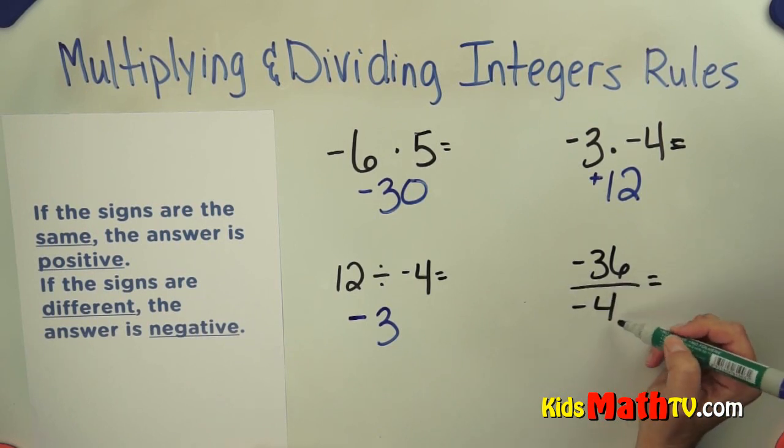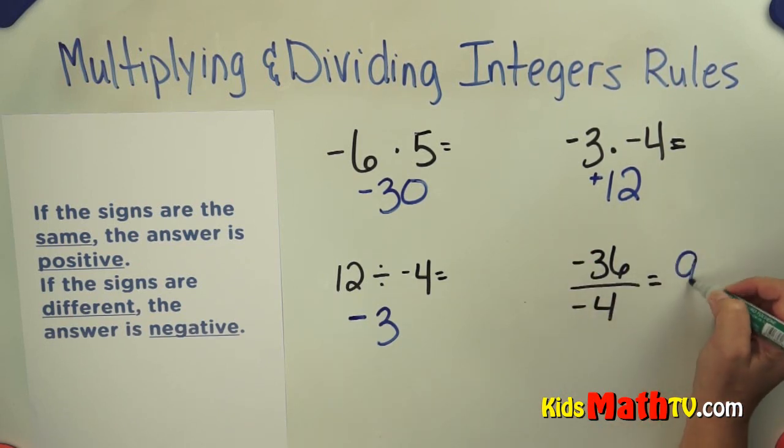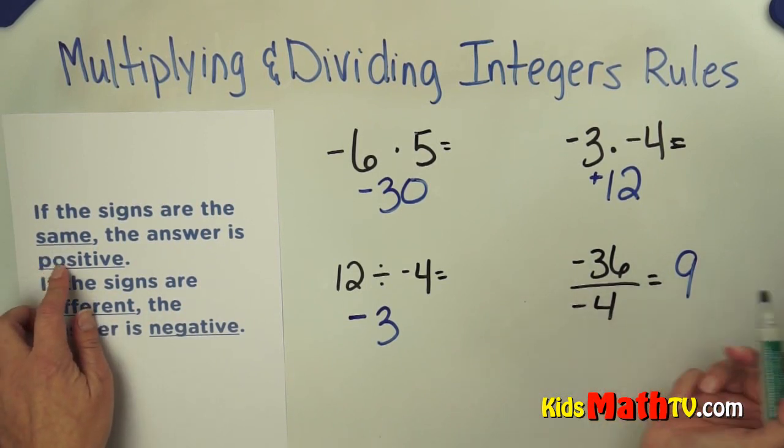This is negative 36 divided by negative 4. So I simply do 36 divided by 4, which is 9. I see a negative and a negative, so the signs are the same. The answer is positive, it's a positive 9.